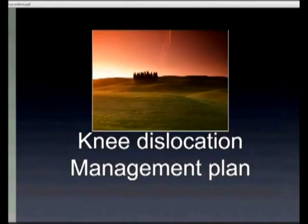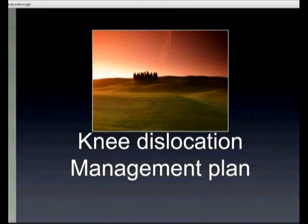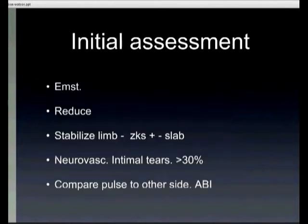Looking at the management of knee dislocations, in terms of initial assessment, most knee dislocations are high-trauma injuries and need to be assessed according to ATLS principles. It's important to do a timely reduction after neurovascular assessment, and then re-assess neurovascularly after reduction. Obviously once reduced, the knee needs to be stabilised, initially with a Zimmer knee splint or plaster depending on the degree of extension. Neurovascular injuries and compartment syndrome are two significant complications, particularly intimal tear of the popliteal vessel due to its being fixed at the adductor hiatus and the soleal arch. At least more than 30% of patients with a knee dislocation will have some form of intimal tear.